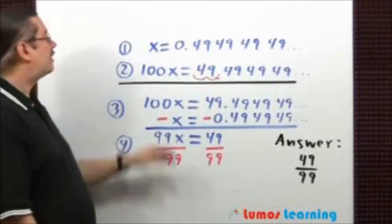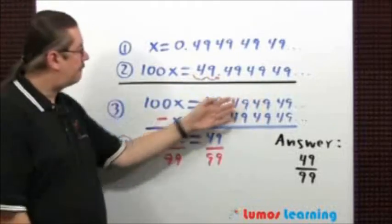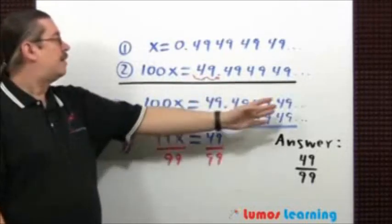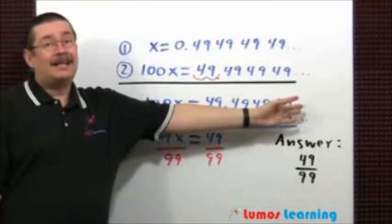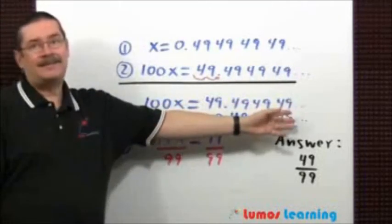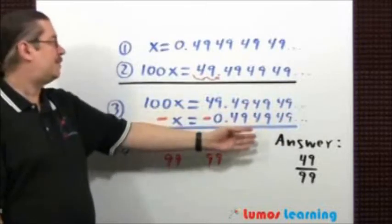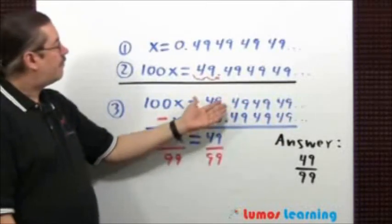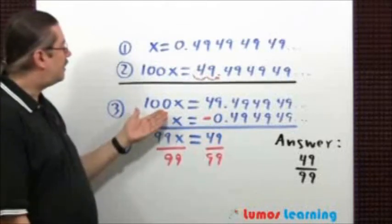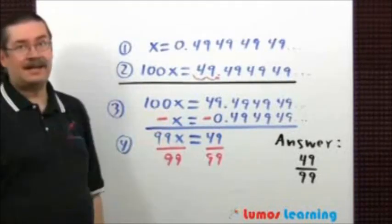Third step: subtract the first equation from the second. It's going to look like this. The nice thing about the setup is that you're going to get a lot of cancellations: 9 minus 9 is 0, 4 minus 4 is 0, 9 minus 9 is 0, 4 minus 4 is 0, and so on. Over here, you're going to have 49 minus 0 is 49. And on the other side of the equation, 100x minus x is 99x.